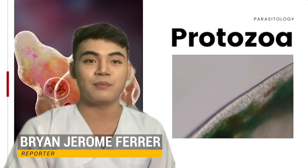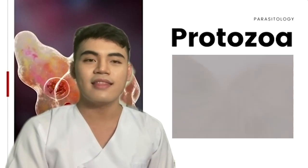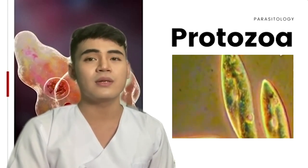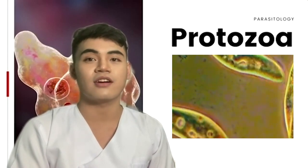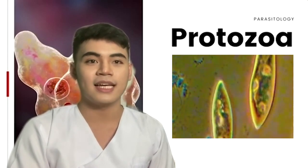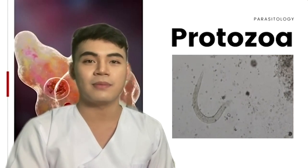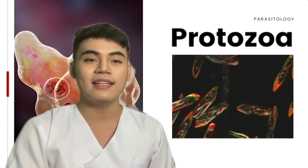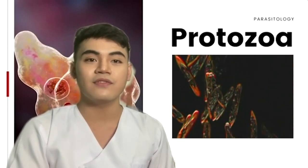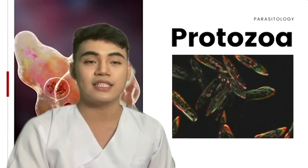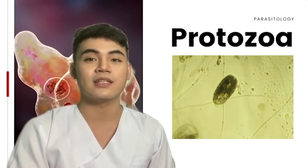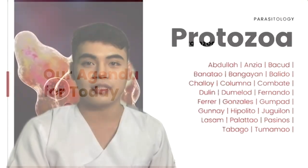Protozoans are eukaryotic unicellular microorganisms which, together with single-cell algae and slime molds, belong to the kingdom Protista. They possess simpler and more primitive structures than the members of the animal kingdom. Most Protozoans are microscopic. They contain membrane-surrounded nucleus as well as other membrane-bound organelles. Most Protozoans have, at least in some stage of their life, structures such as flagella or cilia that enable them to move and, for some other species, acquire nutrients.